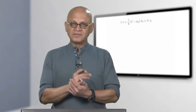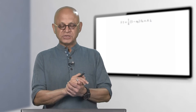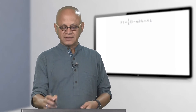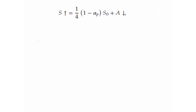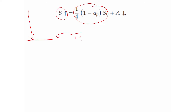Let us recap a little the radiation balance that we are looking at. Essentially, we took the surface and said there is a net short wave coming in, it depends on the albedo, and the surface emits long wave which is obviously sigma surface temperature to the fourth. But how is the surface temperature determined?